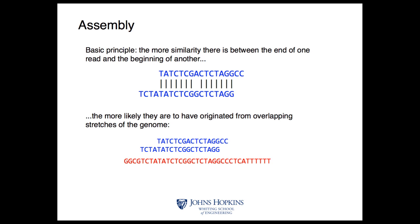The basic principle of assembly is that any two reads that came from overlapping positions of the genome should be quite similar to each other in their sequence. We should be able to find reads where the suffix of one read is similar to the prefix of another. For example, these two reads share an overlap of about 15 bases, so we can find that suffix of one read that matches a prefix of another, which gives us information about what the genome sequence might be.